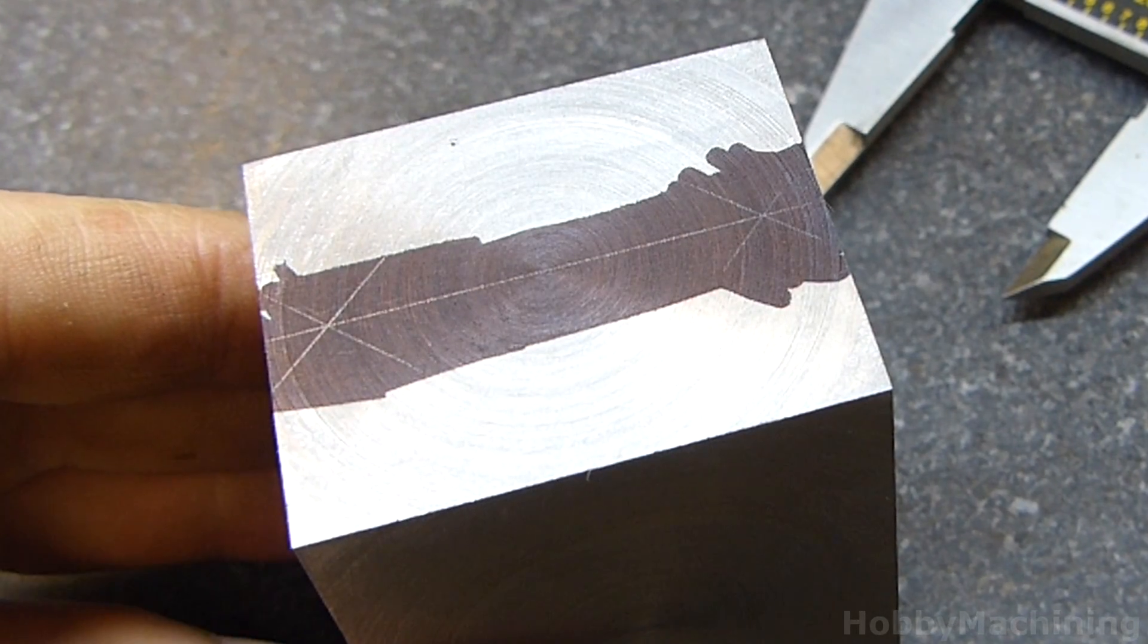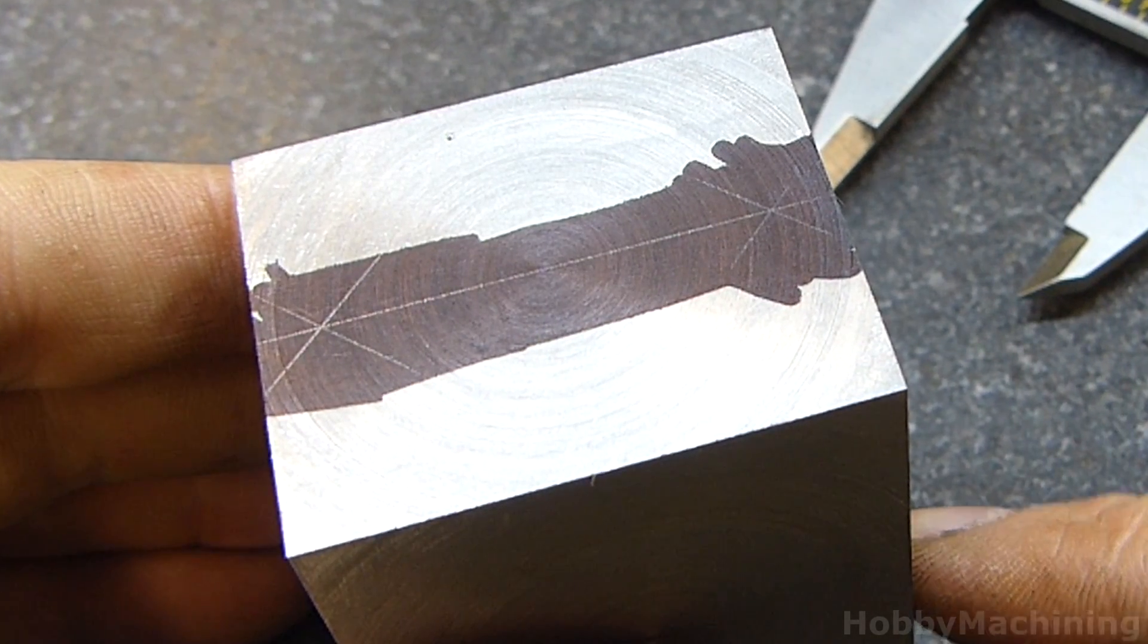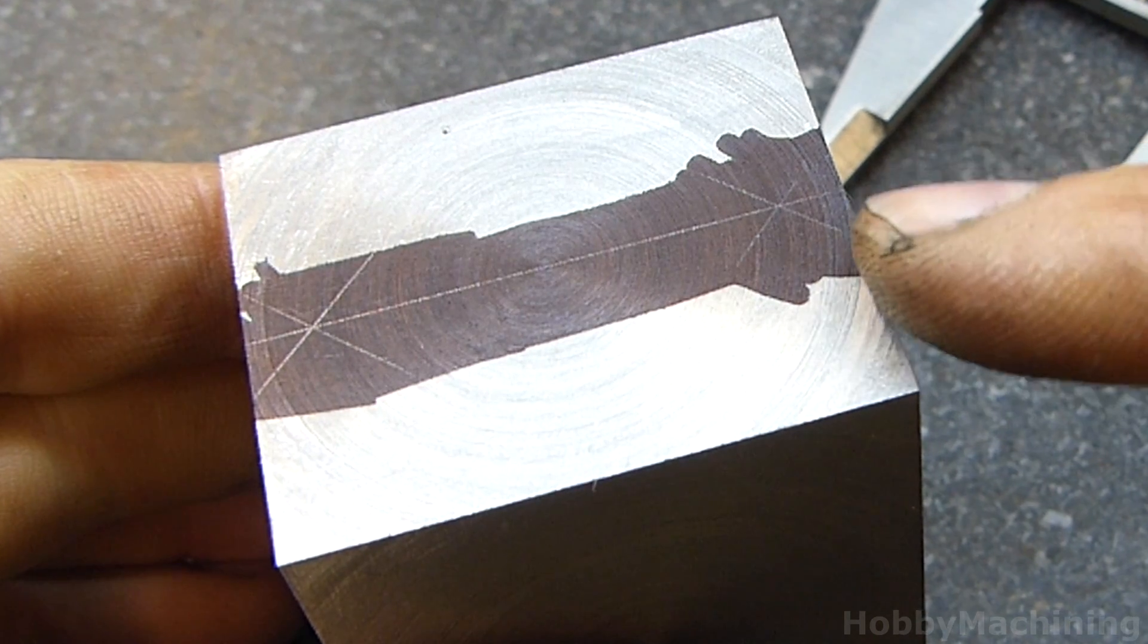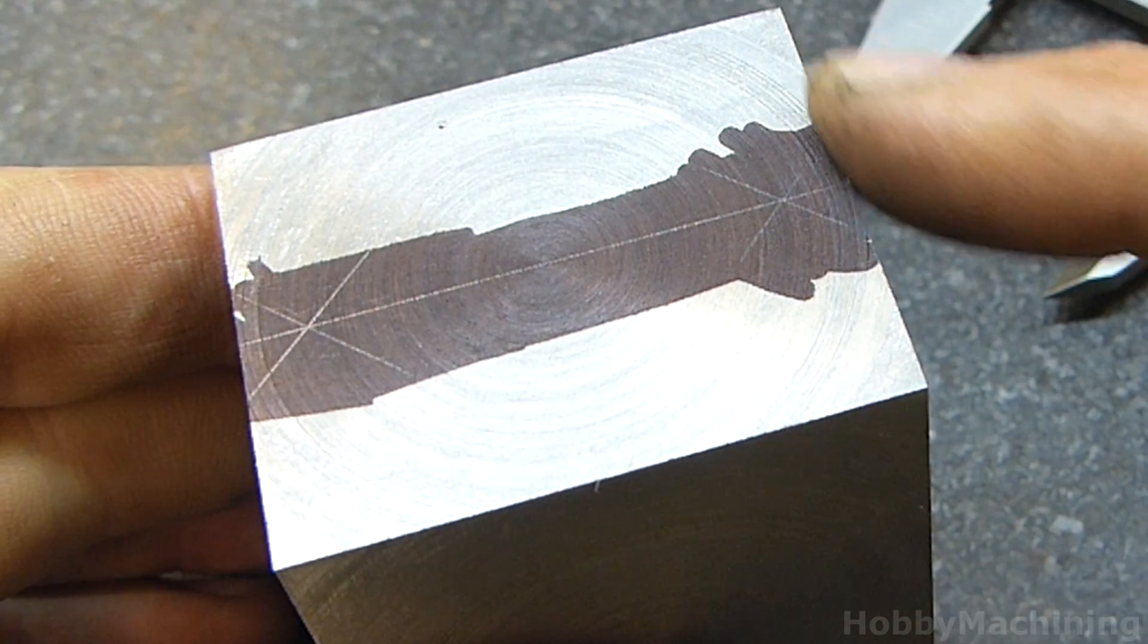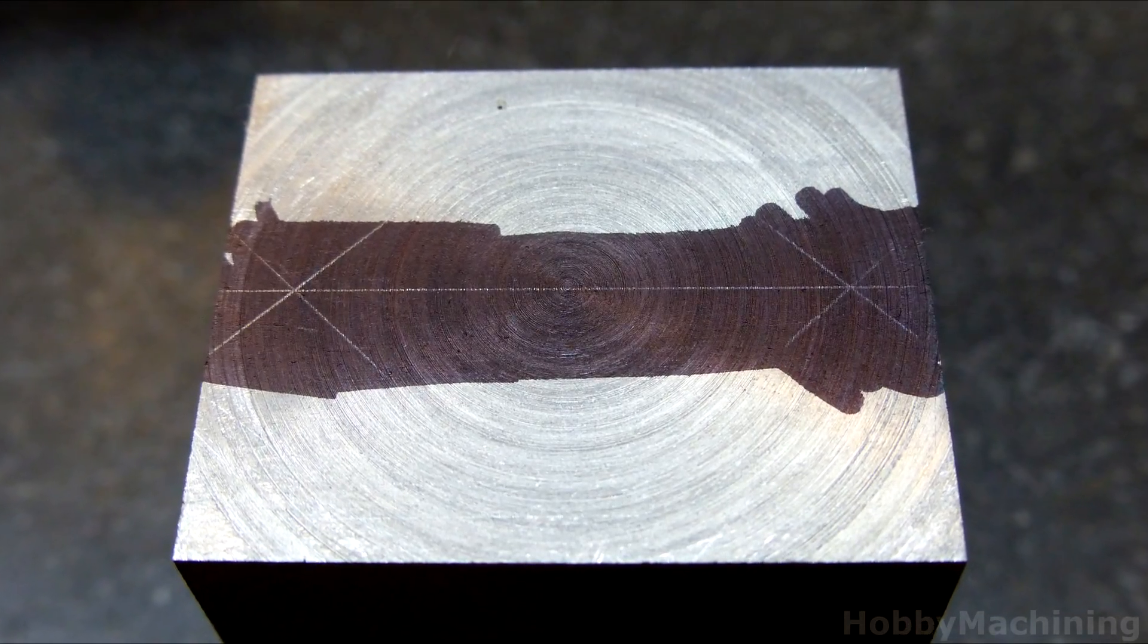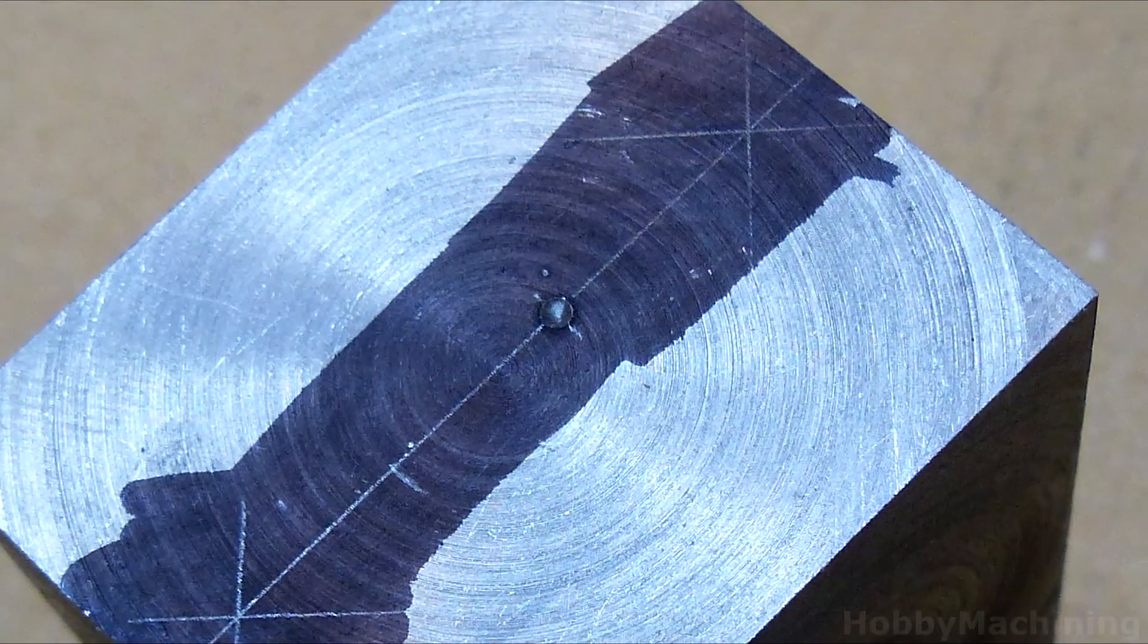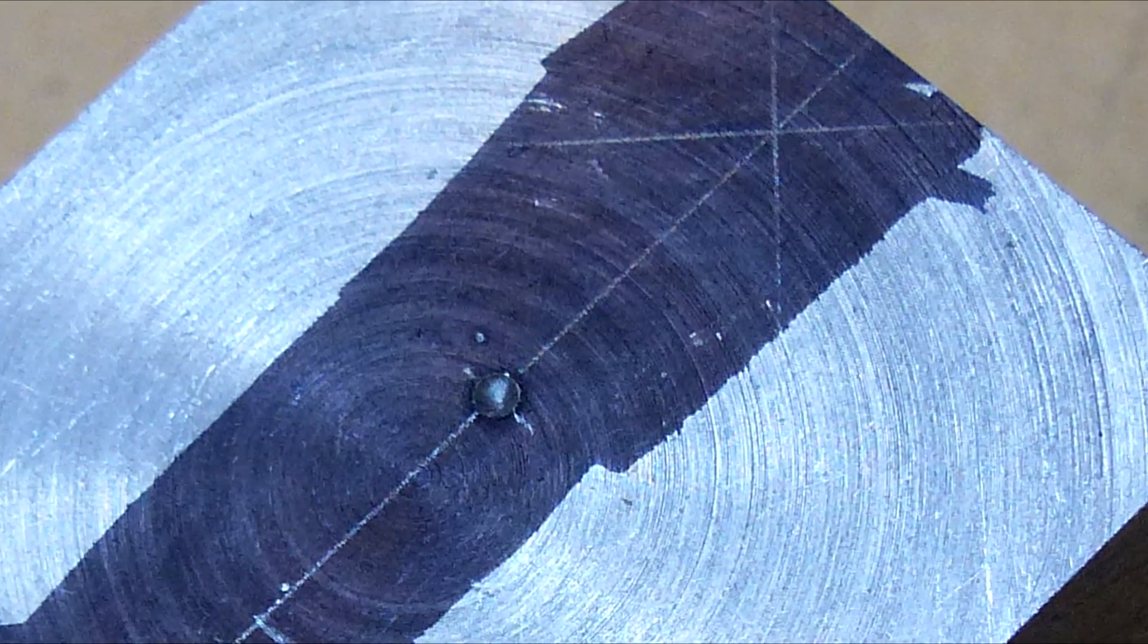And there we go, without any measuring, we've bisected this rectangle providing a line down the exact center, which I can then use to center punch my mark and proceed with machining.